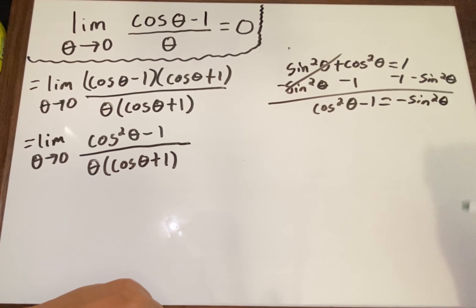So in place of cos²θ minus 1, we can substitute negative sin²θ. The limit as θ approaches zero becomes negative sin²θ over the same denominator: θ times (cos θ + 1).